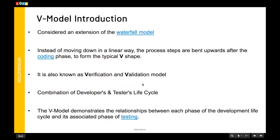The V model is an extension of the waterfall model. In waterfall it's a linear flow starting from requirements, step by step. In the V model, instead of moving down in a linear way, the process steps are bent upwards after the coding phase, forming a typical V shape — that is why it's called the V model. It is also known as the Verification and Validation model.